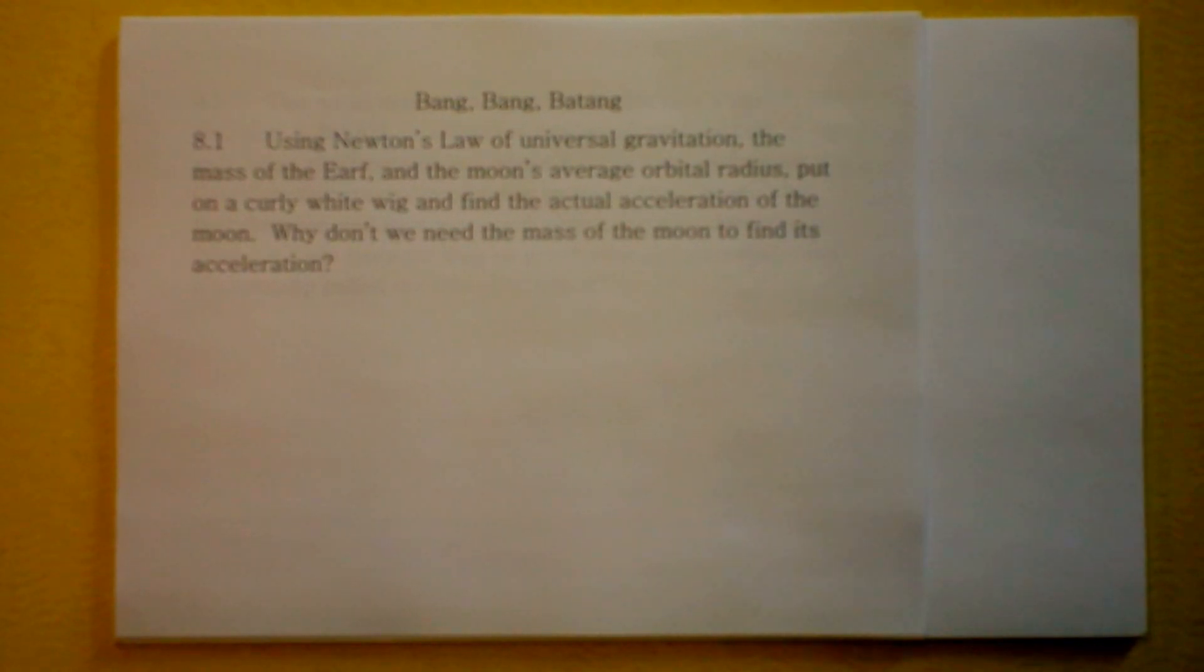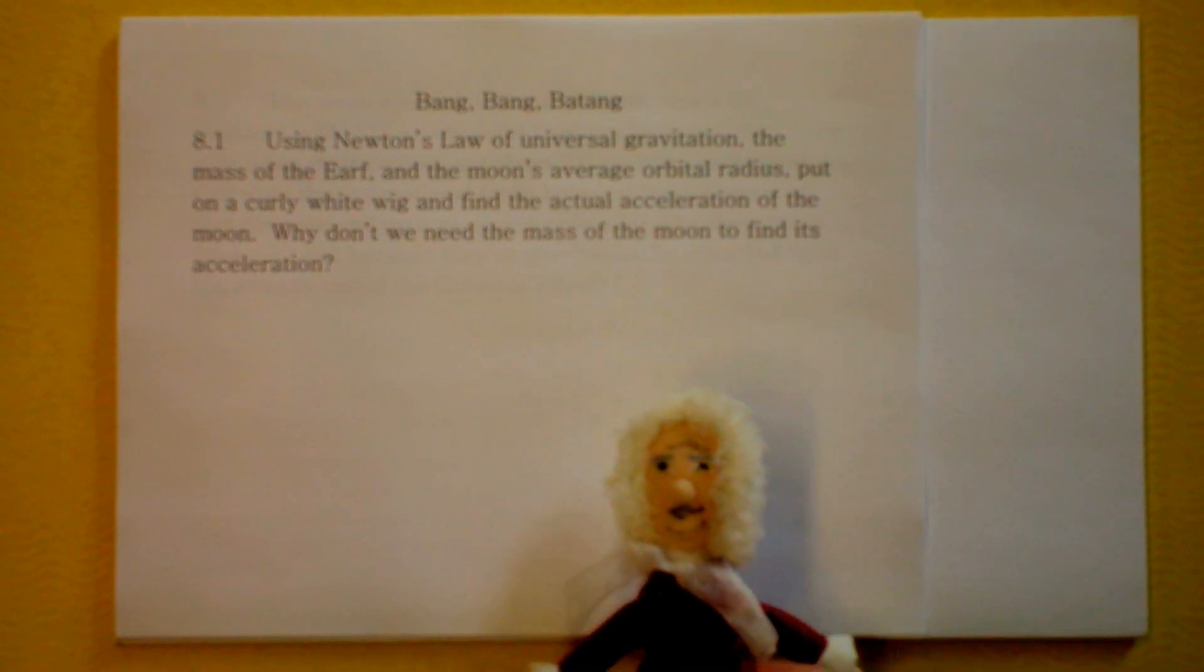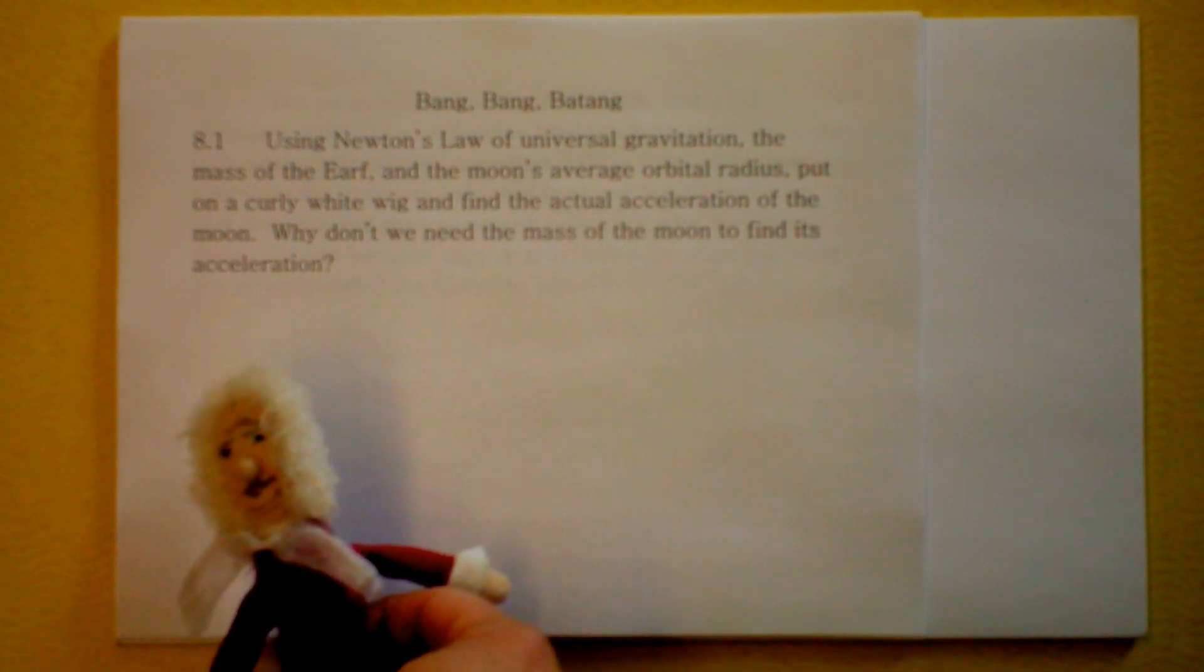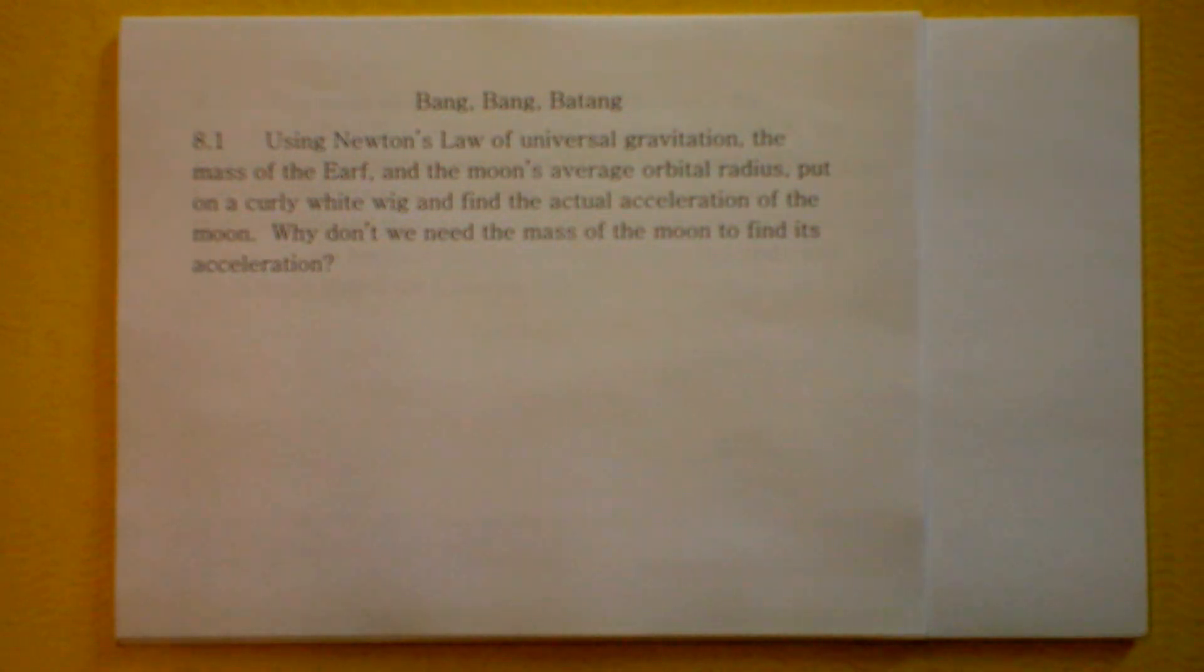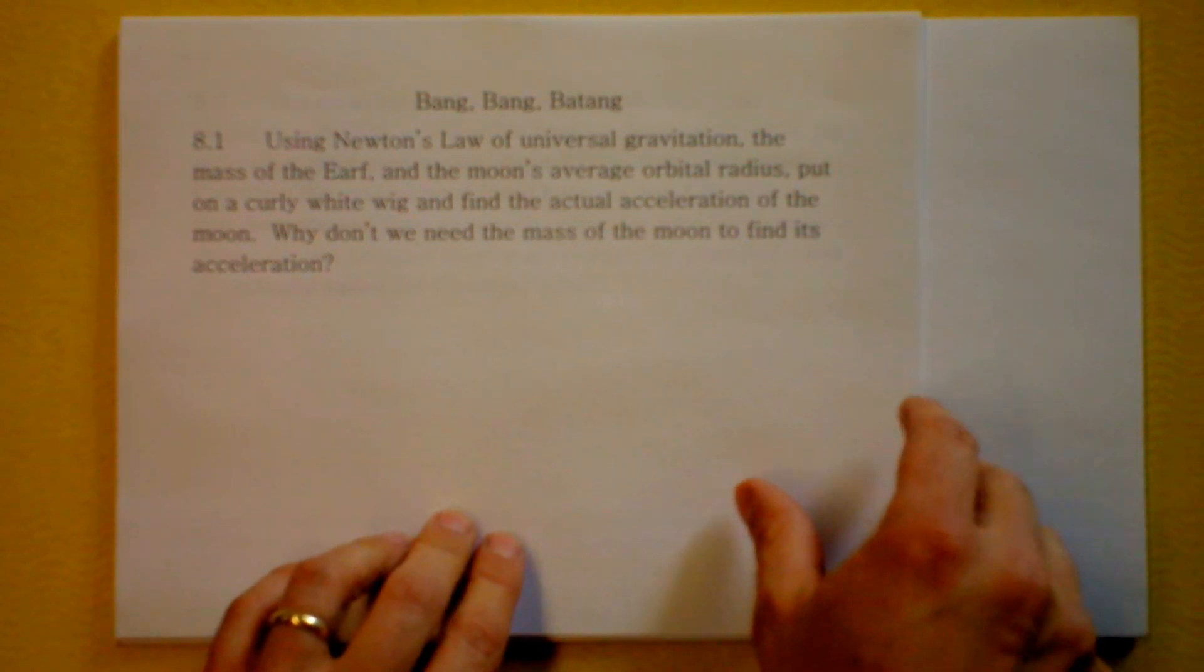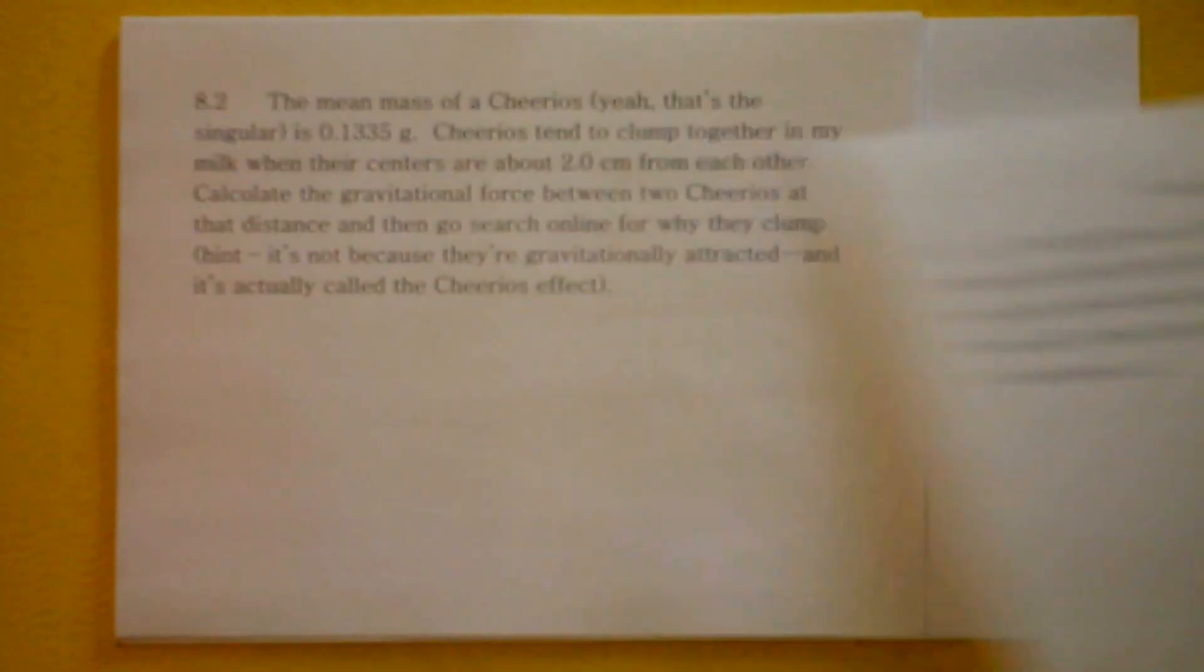Well, you've got Nalug, Newton's Law of Universal Gravitation, you've got the mass of the Earth and the Moon's average orbital radius, and I want you to put on a curly white wig and find the actual acceleration of the Moon. And the interesting thing is the mass of the Moon is not a factor in the actual acceleration of the Moon in its orbit around the Earth. Go figure.